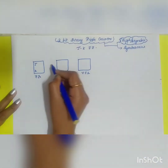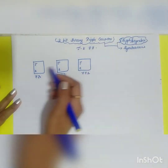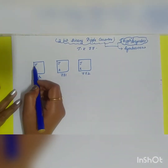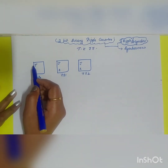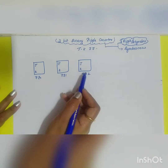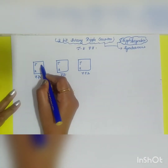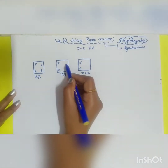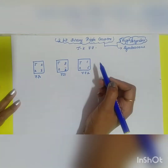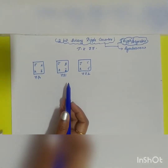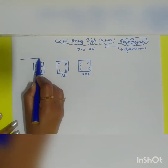The JK inputs are the inputs of the JK flip-flop. In the case of a counter, the J and K inputs will be shorted together and it acts as a T flip-flop. So the outputs will be A, A-bar, B, B-bar, C, and C-bar.